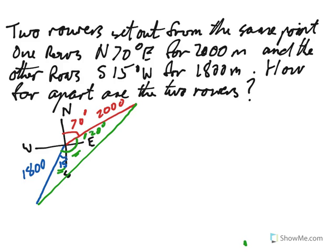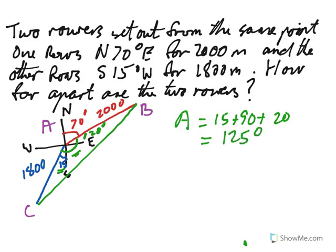This angle, the green angle in here. Well there's a 15 there, there's 15 here, there's 90 here, and 20 degrees in there. So that angle that we're looking at, let's just label this A, B, C. So this angle that we're interested in, angle A, equals 15 plus 90 plus 20, which I believe would be 125 degrees.